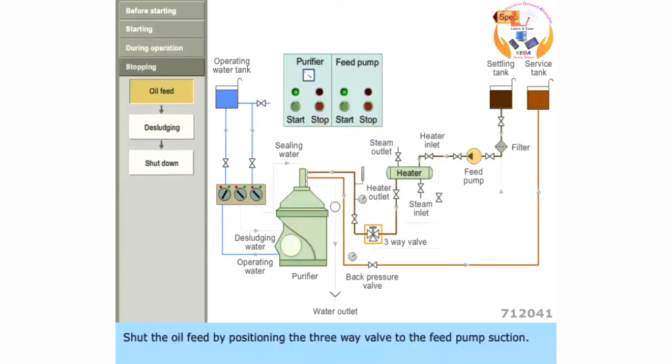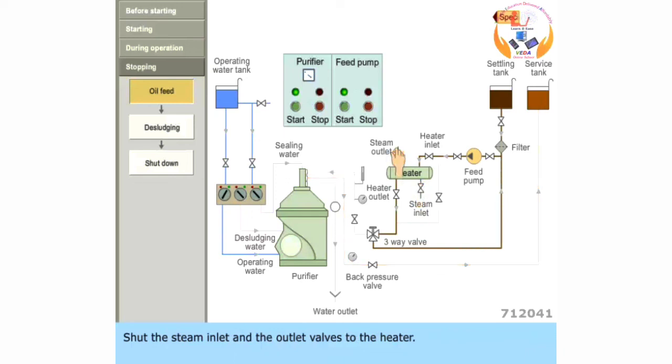Shut the oil feed by positioning the three-way valve to the feed pump suction. Shut the steam inlet and the outlet valves to the heater. And stop the feed pump.